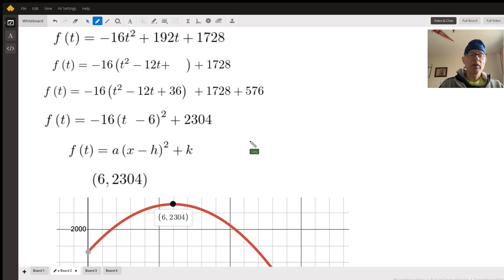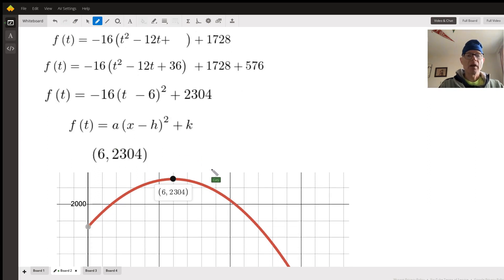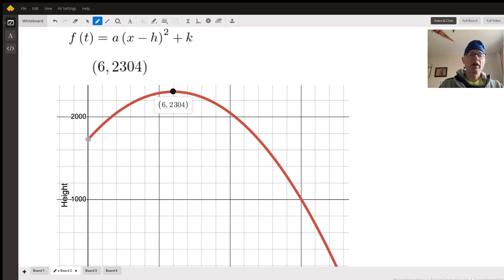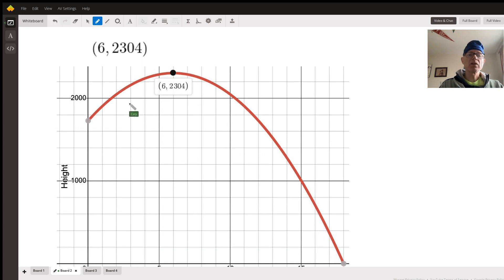Now it's actually in vertex form, which is like this, where h and k are the coordinates of the vertex. And notice that in our equation, we're subtracting 6, and this format says h is what is subtracted, and that was 6. K is what is added, which was 2304. And so 6 seconds and 2,304 feet is the highest point of the thrown object. Okay, there's our vertex.